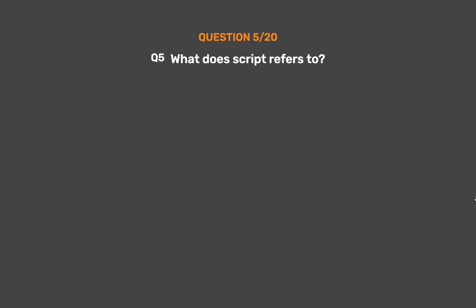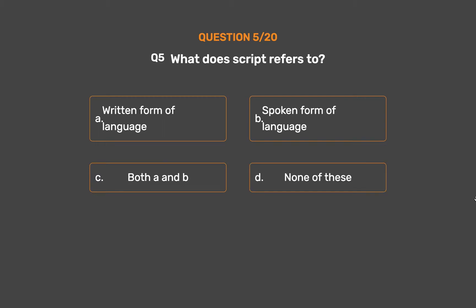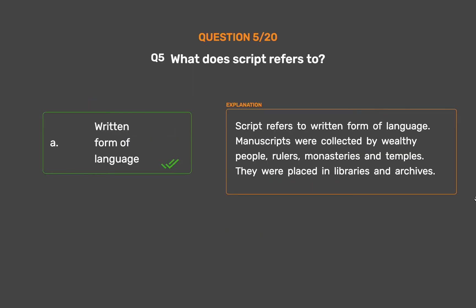Question 5: What does script refer to? Option A: Written form of language. Option B: Spoken form of language. Option C: Both A and B. Option D: None of these. The correct answer is Option A: Written form of language. Script refers to the written form of language. Manuscripts were collected by wealthy people, rulers, monasteries and temples, and were placed in libraries and archives.